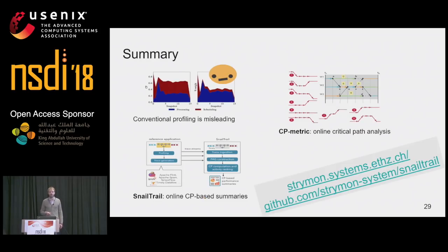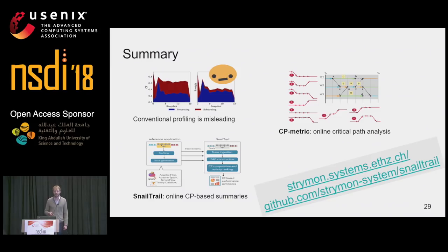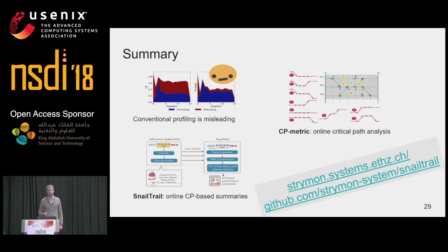Let me briefly summarize. I showed you why conventional profiling can be misleading and indicate incorrect bottlenecks. I introduced the critical participation metric, which allows us to rank activities according to how many critical paths they appear on. And I described SnailTrail, a system to perform critical participation-based summaries online. If you're interested, visit our website — the source code for SnailTrail is available online on GitHub.